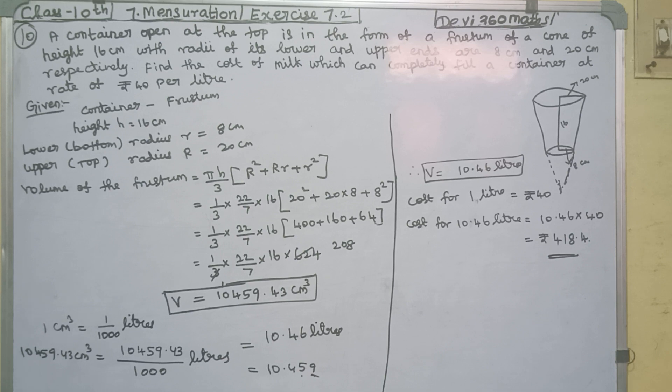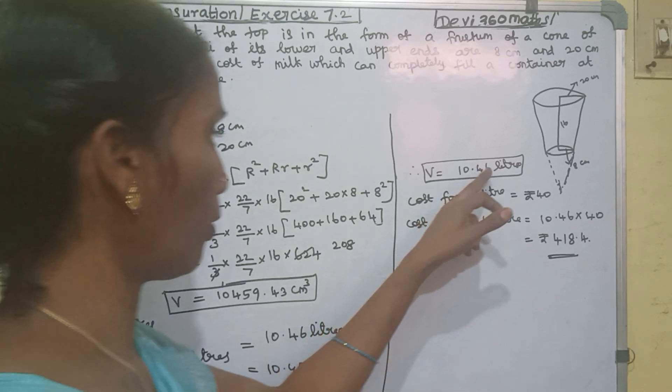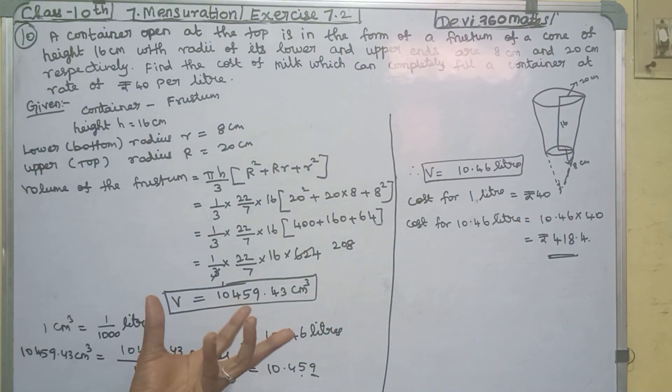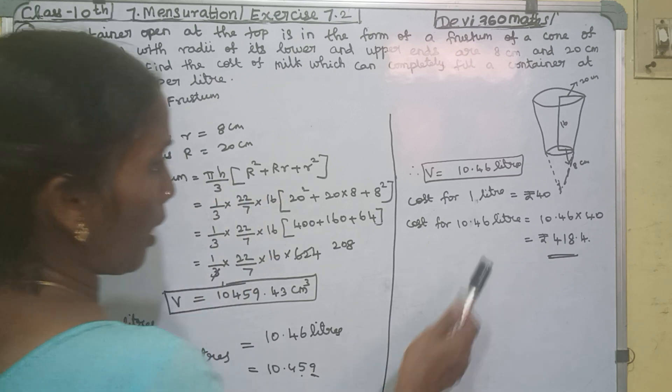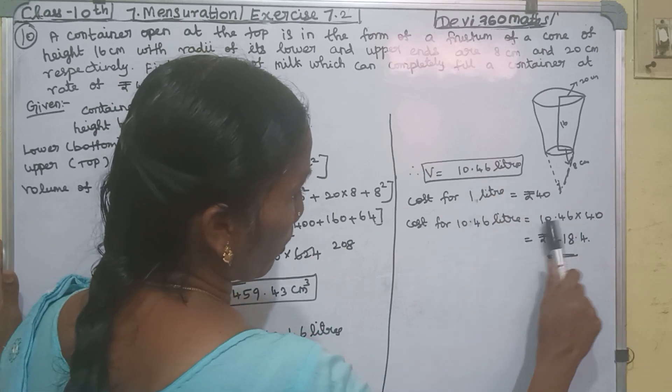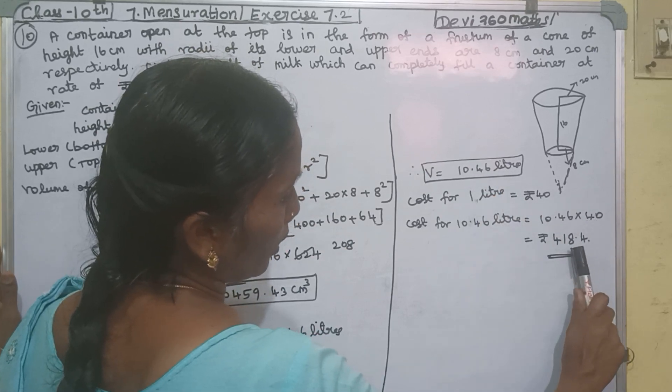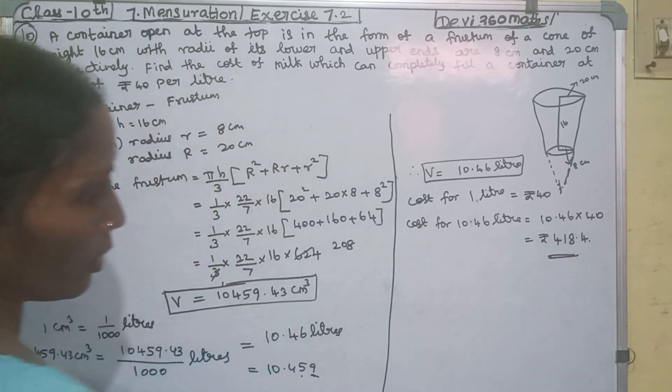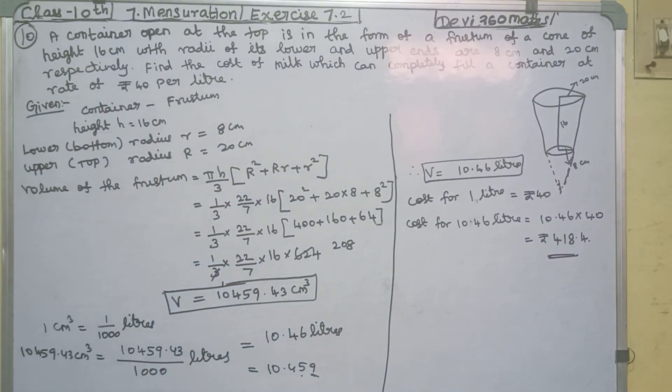If 1 liter costs 40 rupees, then 10.46 liters costs 10.46 multiplied by 40, which equals the total cost.